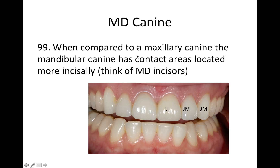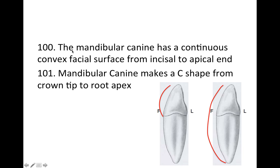Compared to the maxillary canine, the mandibular canine has contact areas located a little more incisally — just think of the mandibular incisors, which all have incisally located contacts. The mandibular canine also has a continuous convex facial surface from incisal to apical, and the mandibular canine makes a C-shape from crown tip to apex, representing that convexity when viewed from the interproximal.